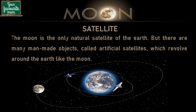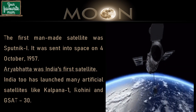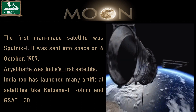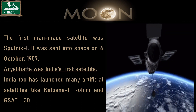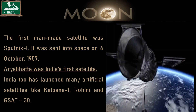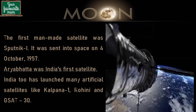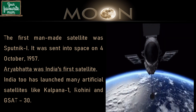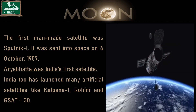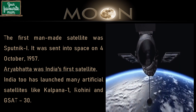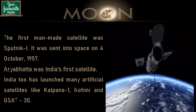The moon is the only natural satellite of the earth, but there are many man-made objects known as artificial satellites which revolve around the earth like the moon. The first man-made satellite was Sputnik 1, sent into space on 4th October 1957. Aryabhatta was India's first satellite. After that, India has launched many artificial satellites like Kalpana-1, Rohini, and most recently GSAT-30, launched on 16th January 2020 to provide advanced telecommunication services to the Indian subcontinent.